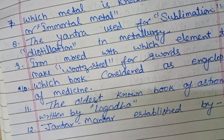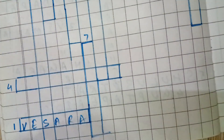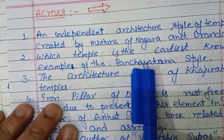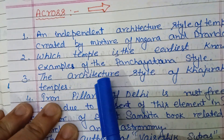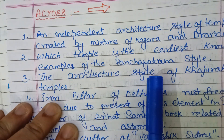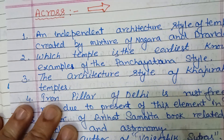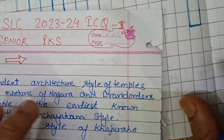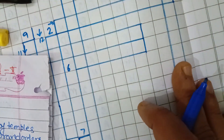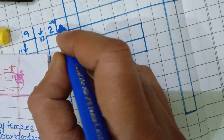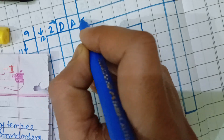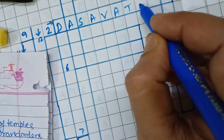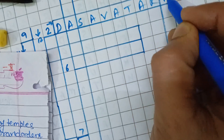Second question: which temple is the earliest known example of Pancha Yatna style? The earliest known example of Pancha Yatna style is the Dasa Vatar temple in Uttar Pradesh.